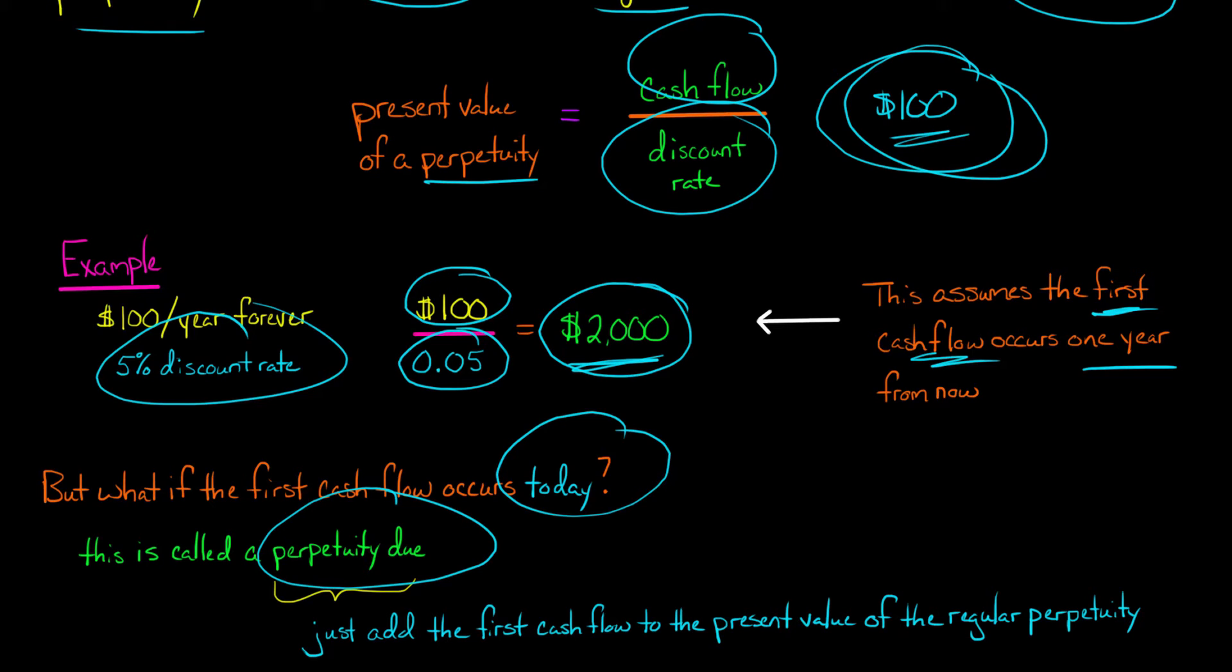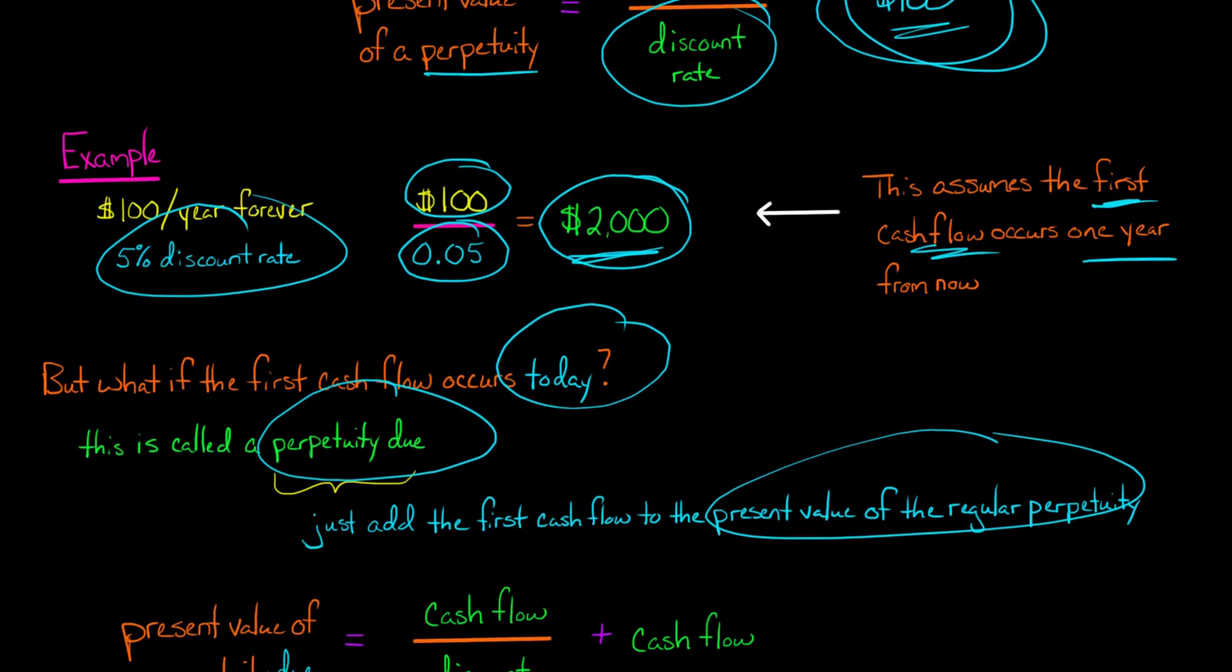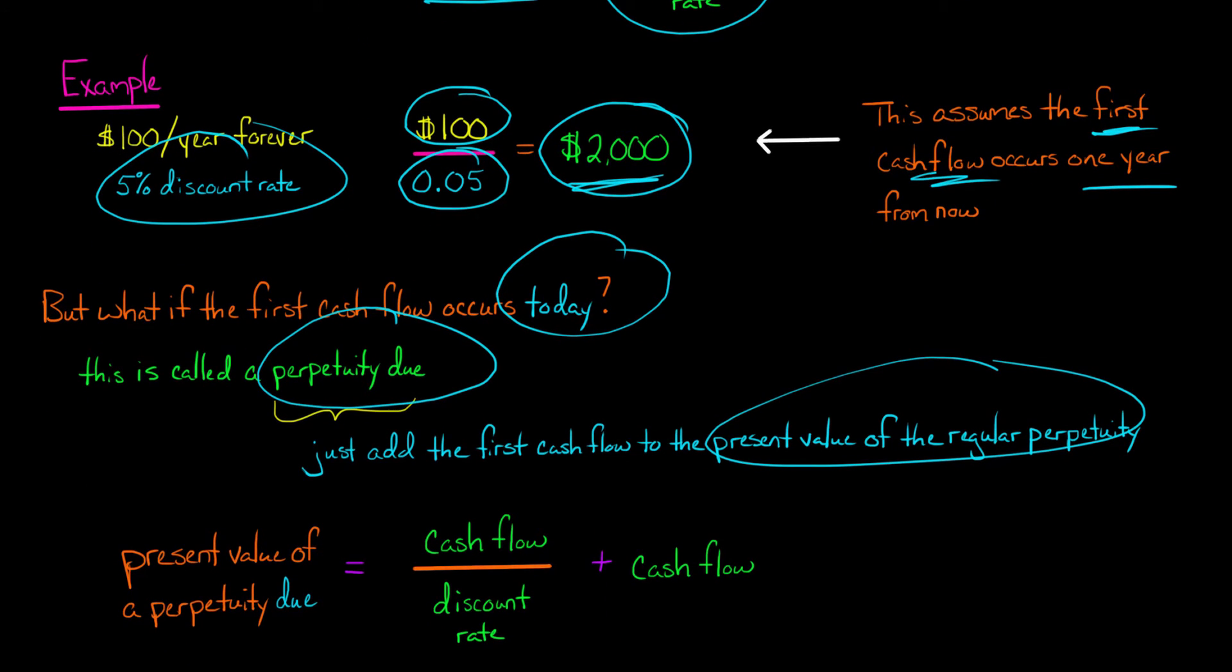Now, what you do is you just add that first cash flow, which is going to be $100, just like the rest of them, to the present value of the regular perpetuity. So it's actually quite simple. So our regular perpetuity, the present value of that was just the cash flow divided by the discount rate.